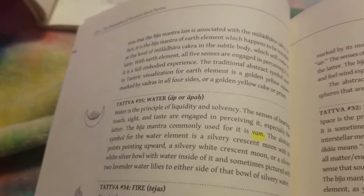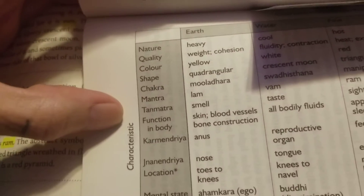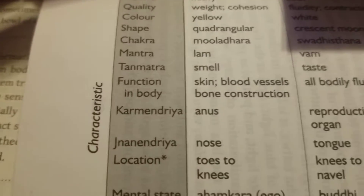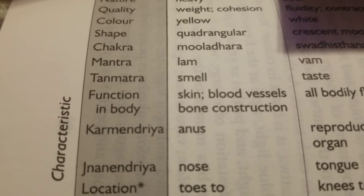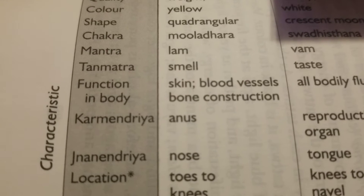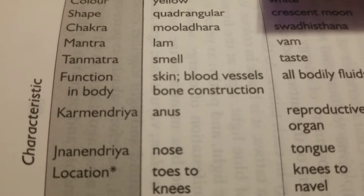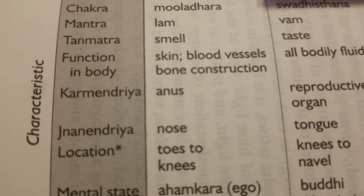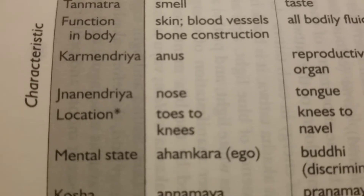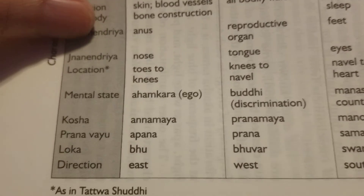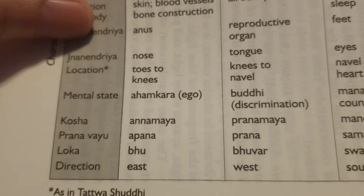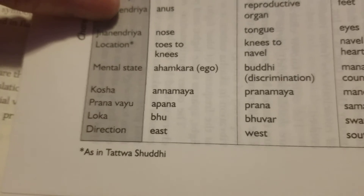This is from Tantra Illuminatum. And then here in Tatwa Shuddhi, we go to the earth element, Prithvi, and read its characteristics. Its nature is heavy. Its quality is weight and cohesion. Its color is yellow. Shape: quadrangular. Chakra: Muladhara. Mantra: LAM. The Tan Mantra is smell. The function in the body is skin, blood vessels, bone construction, anus, and nose — the anus is the Karmendria, the Gyanendria is the nose. The location is the toes to the knees. The mental state is ahamkara, or ego. The kosha is the annamaya kosha, or food sheath. The pranavayu is apana. The loka is bhuh. And the direction is east.